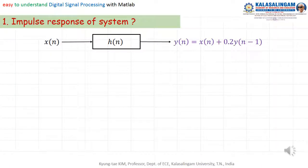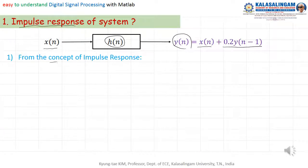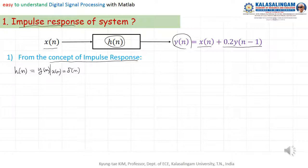Now, how do we obtain the impulse response? The input impulse response and output is x of n plus 0.2 y(n minus 1). First, we can start with the concept of impulse response. Impulse response means h of n — originally h of n means output y of n — instead of x of n, we substitute delta of n, then we can get h of n.